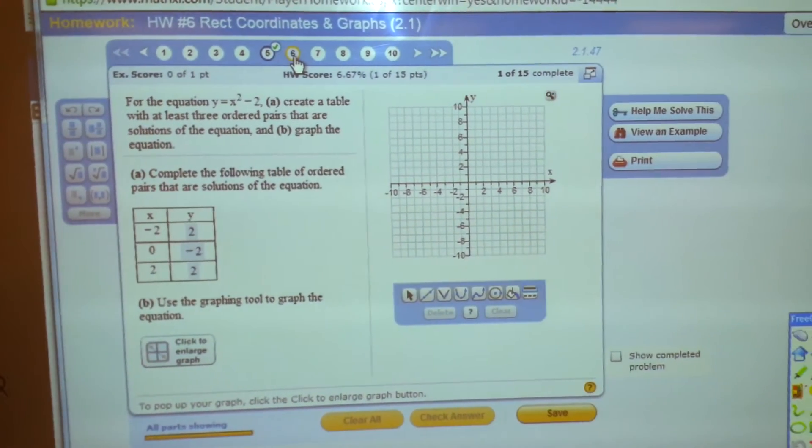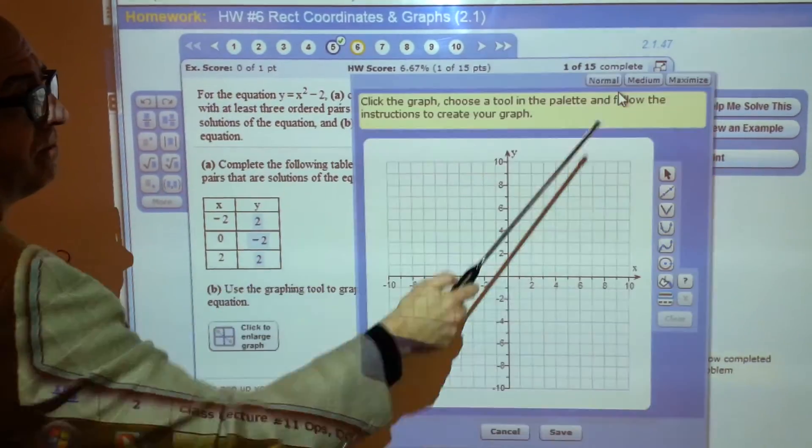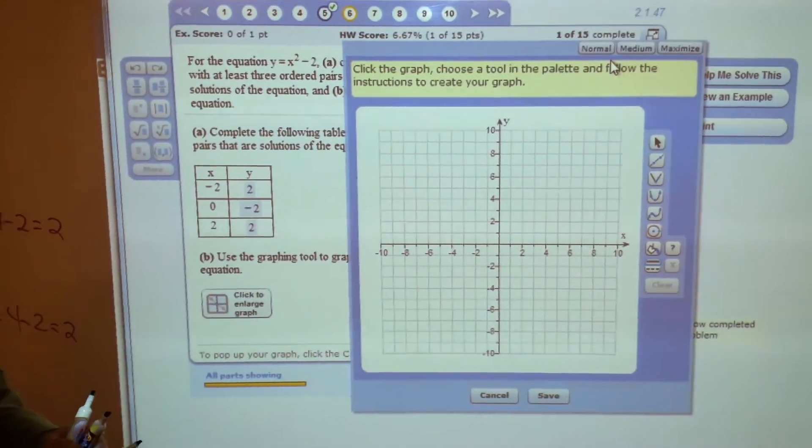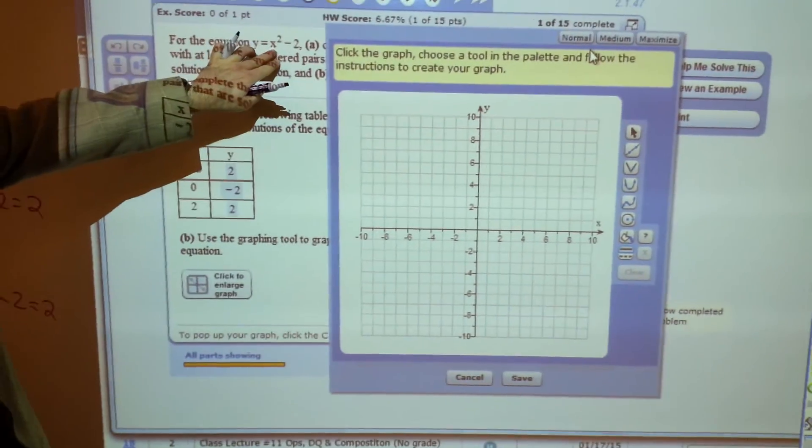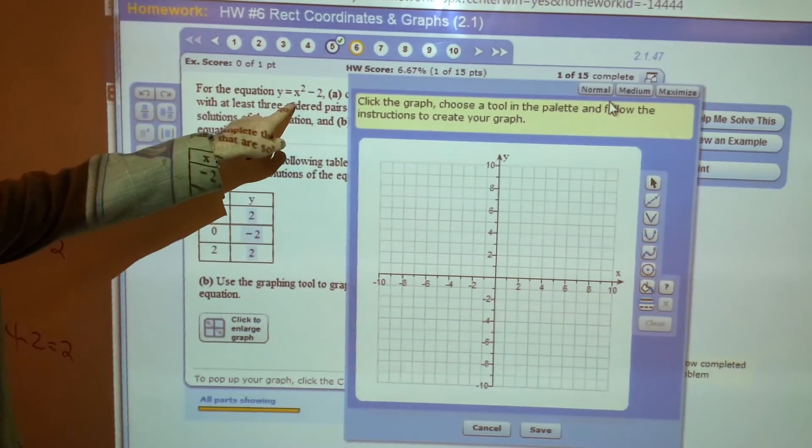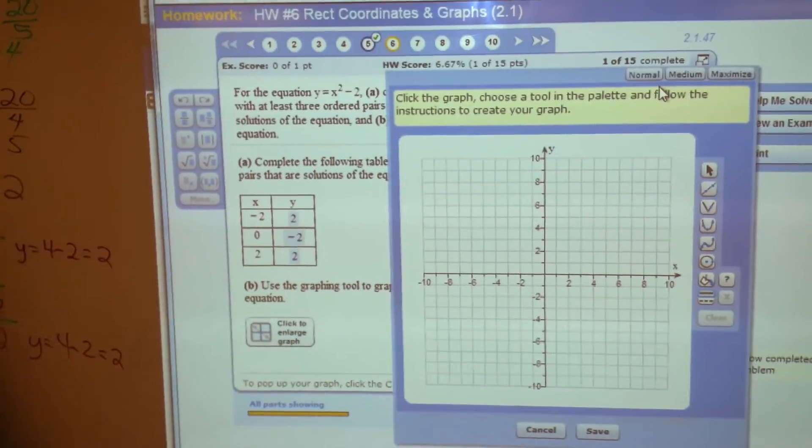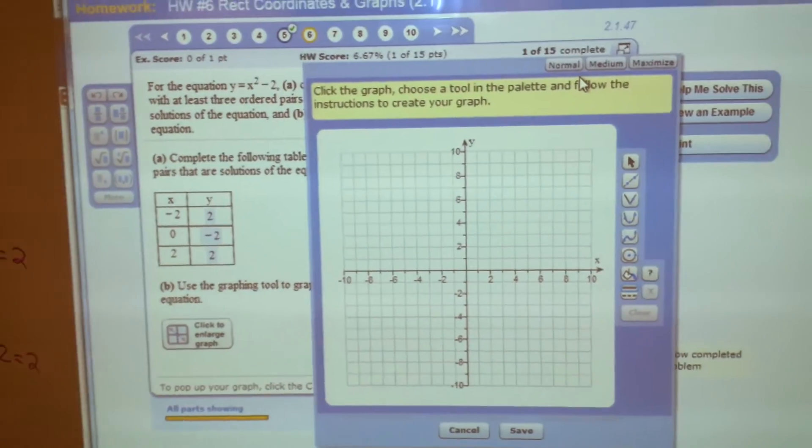Now we're going to use a graphing tool. But this time we're not going to use a line. If there's an exponent in the equation, it's not a line. In fact, this one has an x squared. So let's see if we can figure out which tool to use.